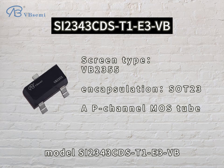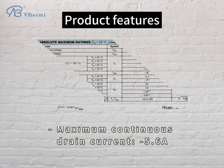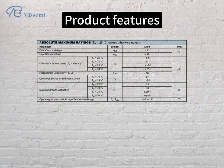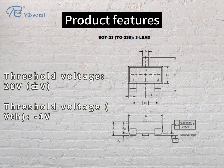Model SI2343CDS-T1-E3-VB. Product features: maximum operating voltage -30V, maximum continuous drain current 5.6A, threshold voltage VTH: -1V.